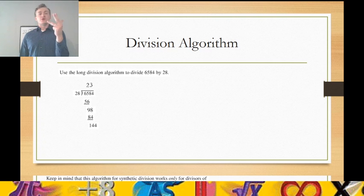28, 56, 84, 112, 140. And then anything over that, 168, is too high. So 28 goes into 140 five times. 28 times 5 is 140, and that difference is 4.